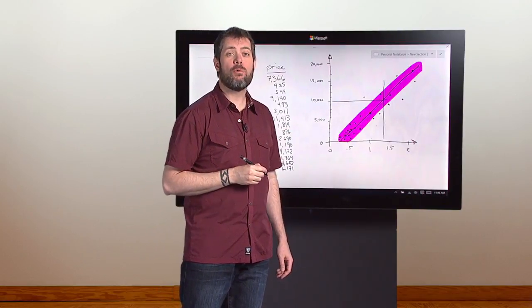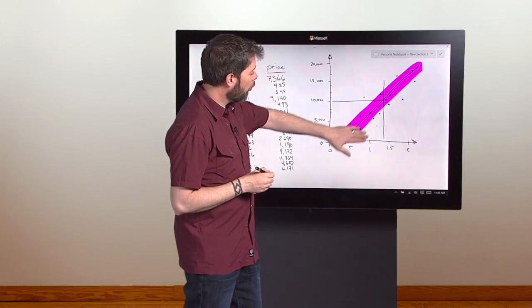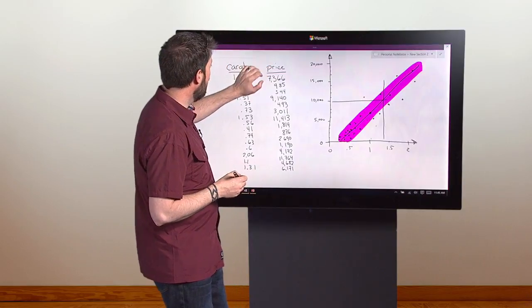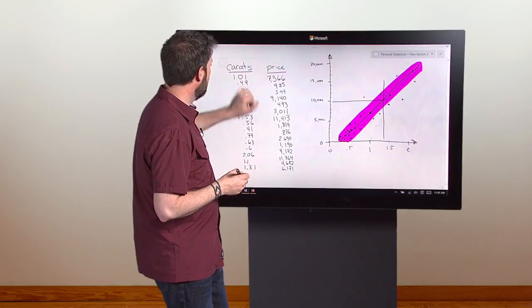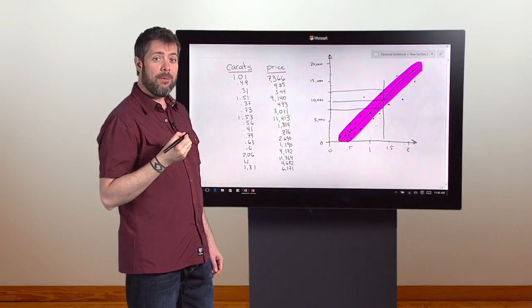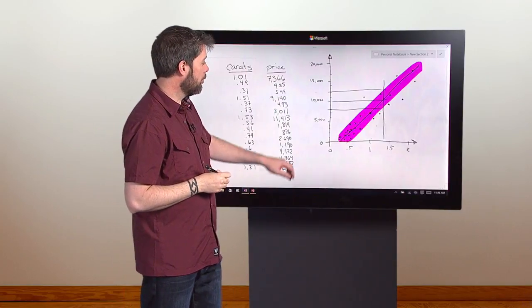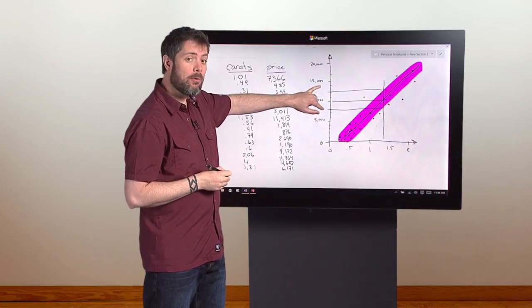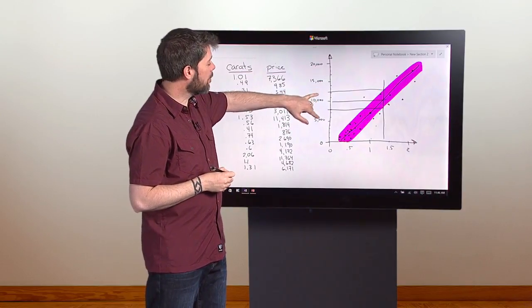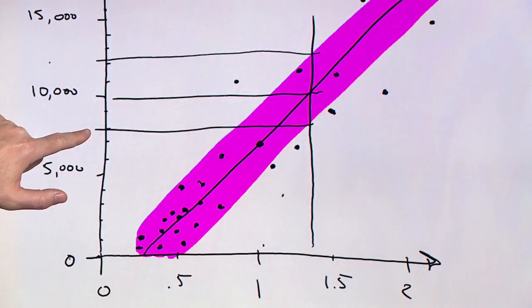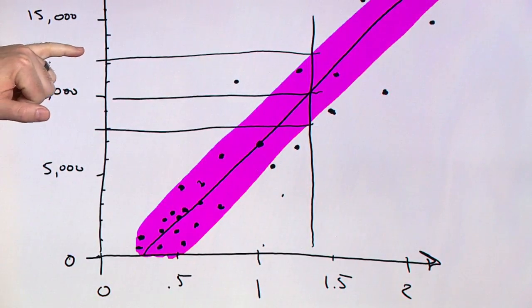Now we can draw two more horizontal lines from where the 1.35 carat line crosses the top and the bottom of that envelope. Now we can see something about our confidence interval. We can say confidently that the price of a 1.35 carat diamond is about $10,000, but it might be as low as $8,000, and it might be as high as $12,000.